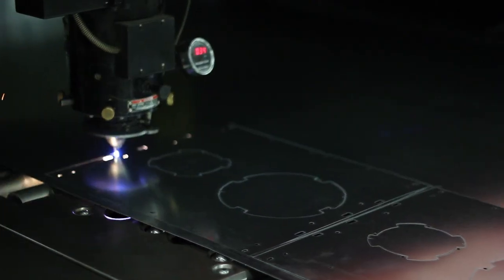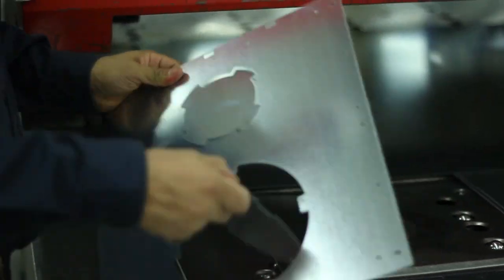We typically cut galvanized steel and cold rolled steels because that is what customers demand, but we have the ability to cut stainless steel, copper, aluminum, pre-painted and pre-plated steels.